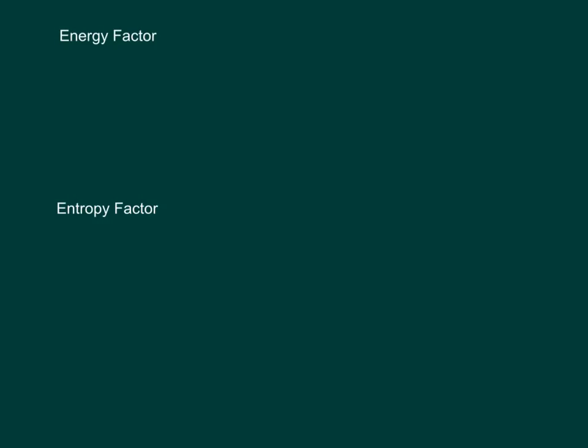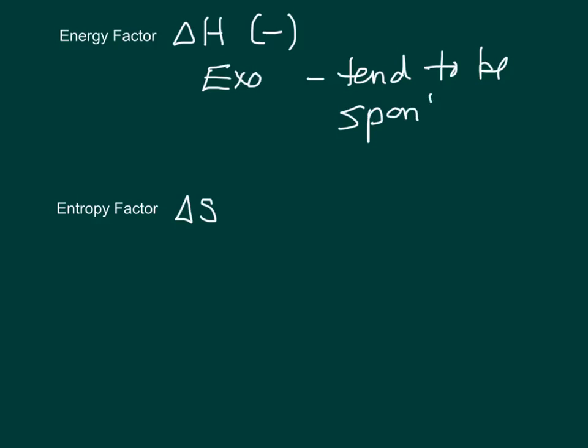There's two factors involved: we've got delta H, energy, and delta S, entropy. Reactions that tend to need energy are obviously not going to be spontaneous. It's going to be reactions that give off energy that are spontaneous. So when delta H is negative, when reactions are exothermic, they tend to be spontaneous. It's not a guarantee because it's not the only factor that matters, but they tend to be spontaneous.